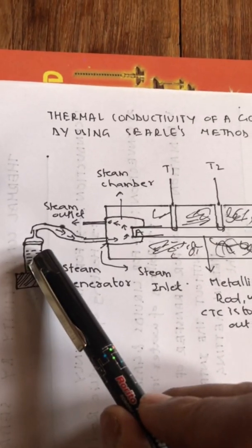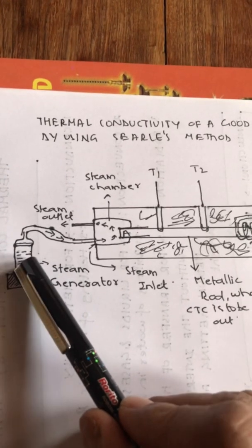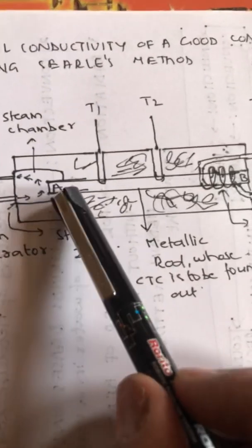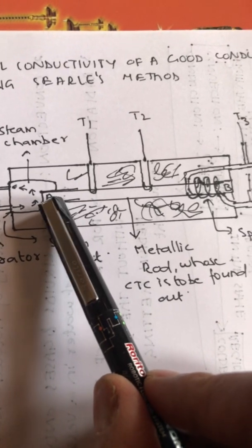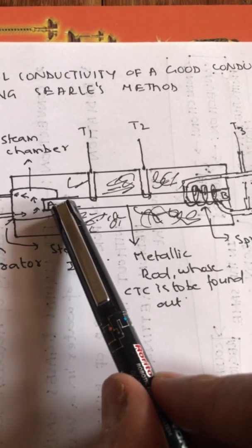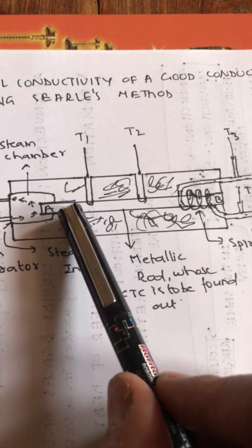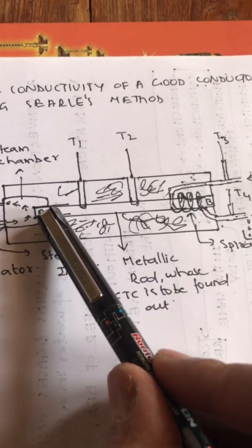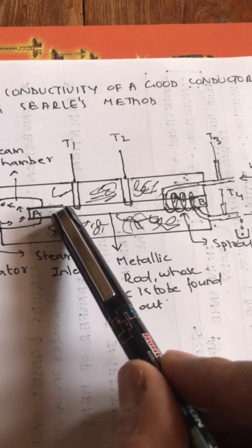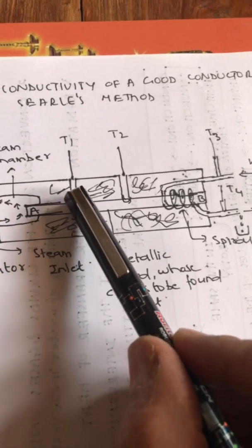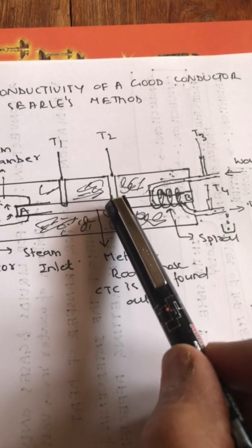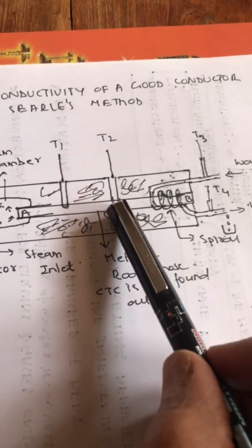To start the experiment: put water in the copper vessel, keep it over the heater, and start boiling it. Steam will be produced, enter the steam chamber, and heat up end A of the metallic rod. Since it is a good conductor, the heat will gradually pass from A to B. The thermometer T1 will then start showing a rising temperature.